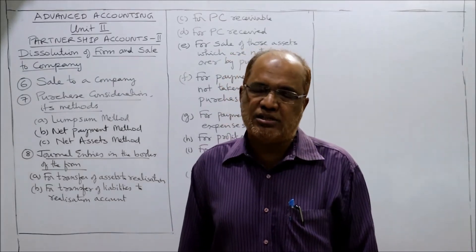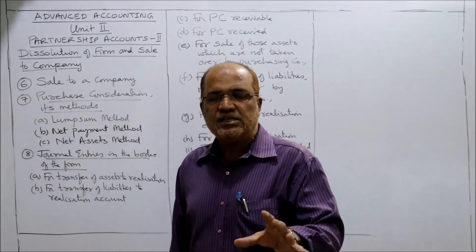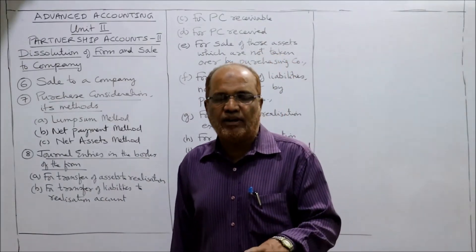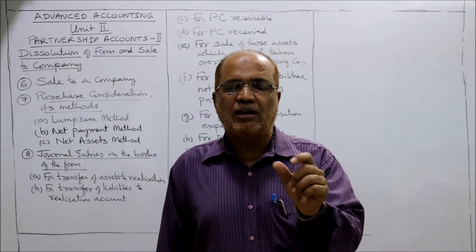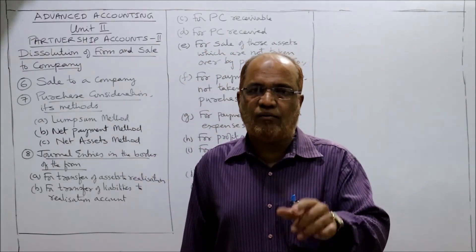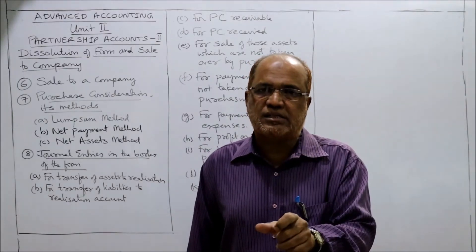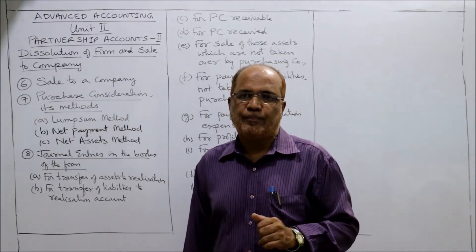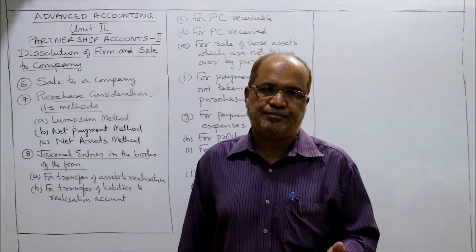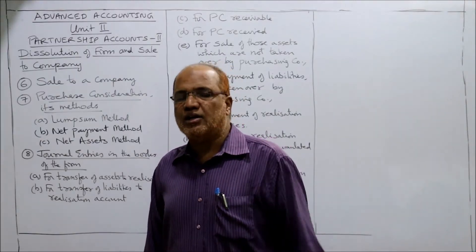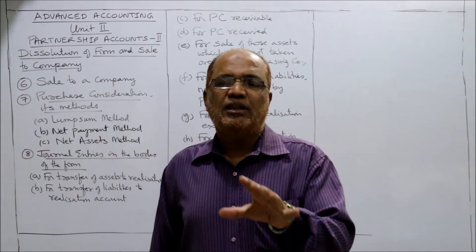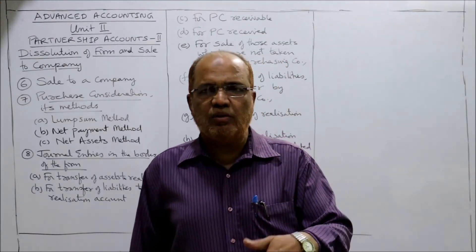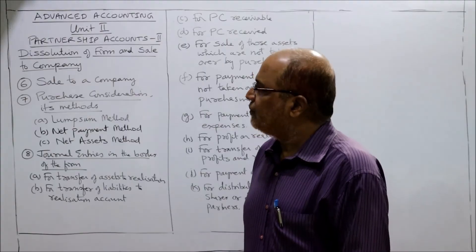The third method is the net assets method, applied when some mode of payment is missing — for example, cash or shares are missing. In this method we find the net worth of the partnership firm: agreed value of all assets minus agreed value of all outside liabilities gives the purchase consideration. When received, purchase consideration is in the form of cash, shares, or debentures, distributed to partners in their old profit sharing ratio.